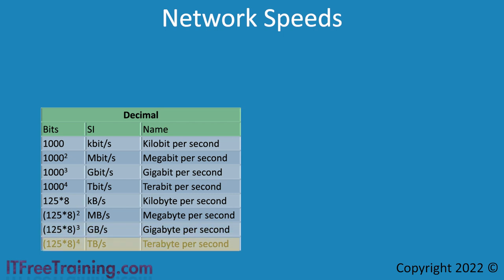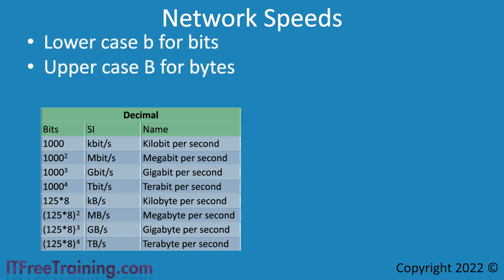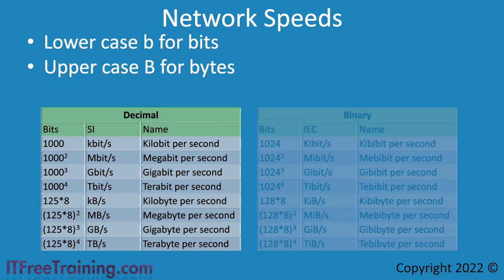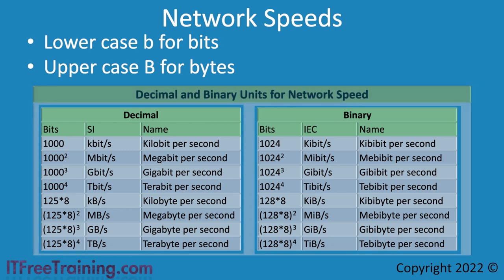If you get confused about which is which, remember that a lowercase b is for bits and an uppercase B is for bytes. In most cases, bits are used to measure how fast a network connection is, and bytes are used when performing transfers across the network. Bytes can be grouped into 1,000 or 1,024 byte groups with the same naming convention as before. However, the decimal convention is sometimes used instead of the binary convention, which can lead to misleading and inaccurate results when estimating transfer times.